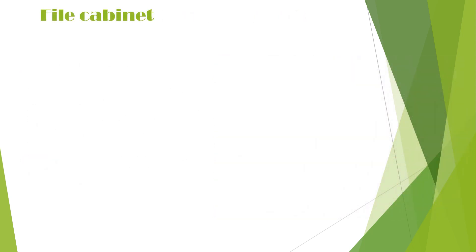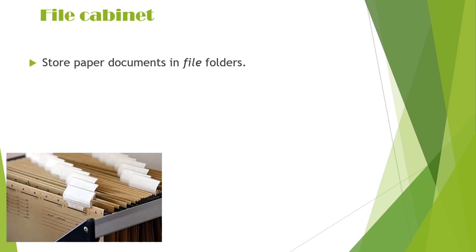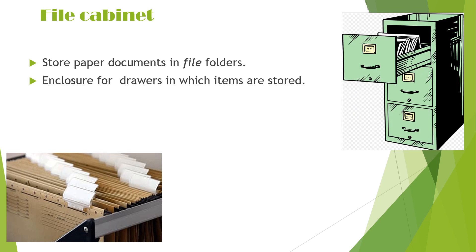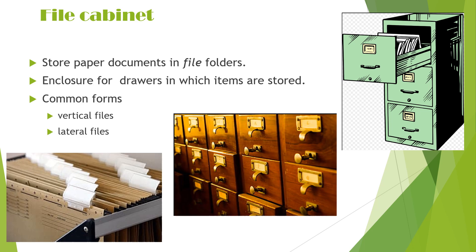The next equipment is the file cabinet. A file cabinet is used to store various paper documents in file folders — enclosures with drawers in which files are stored. There are common forms such as vertical files and lateral files, and accordingly the drawers are designed so we can save and place the files in the file cabinet.